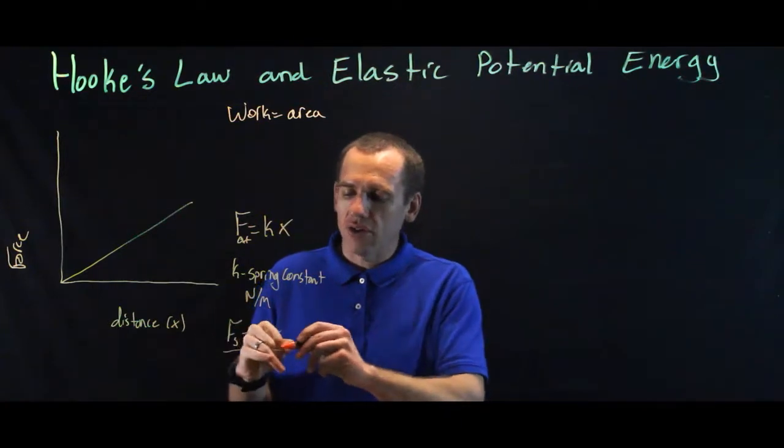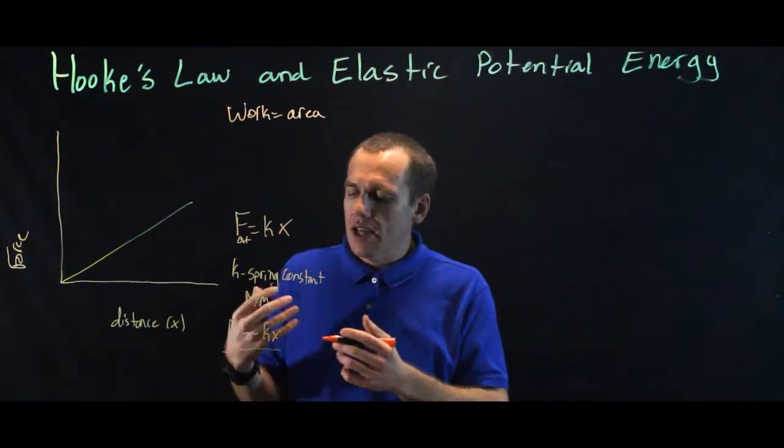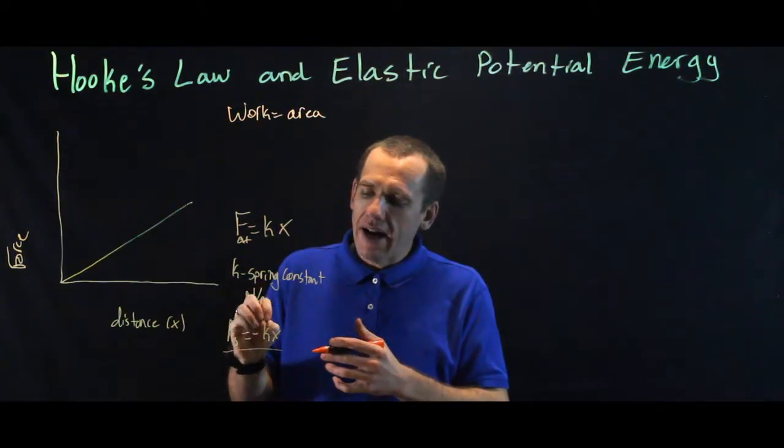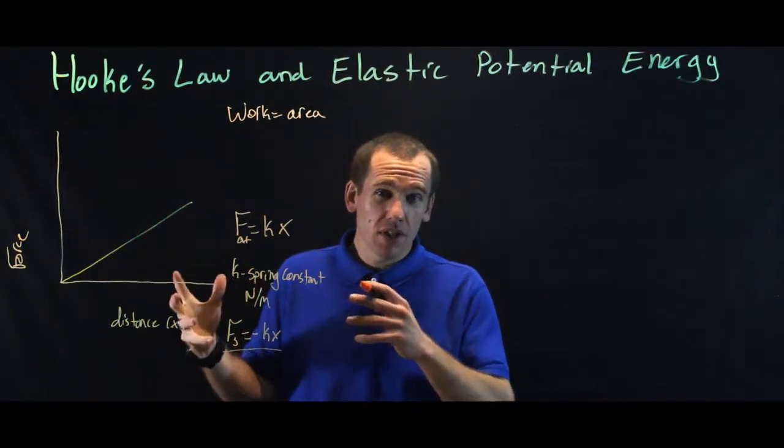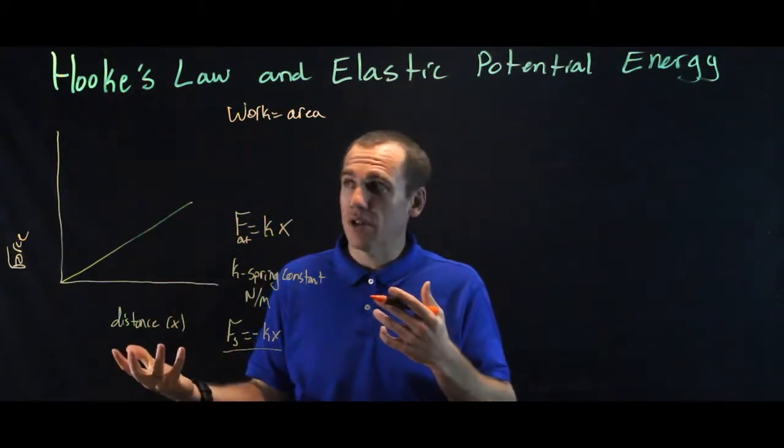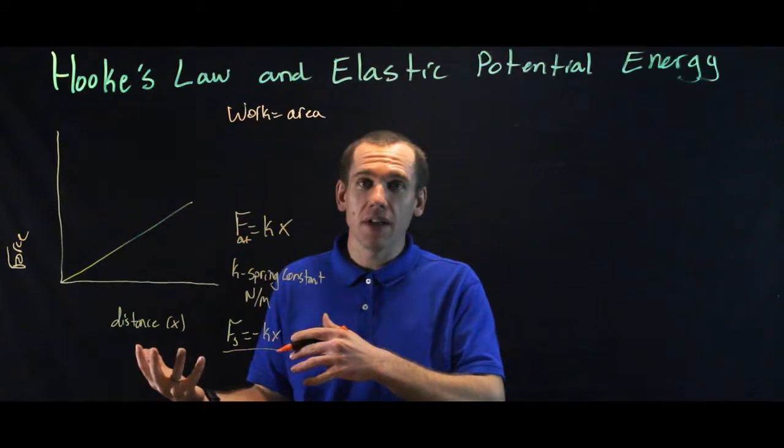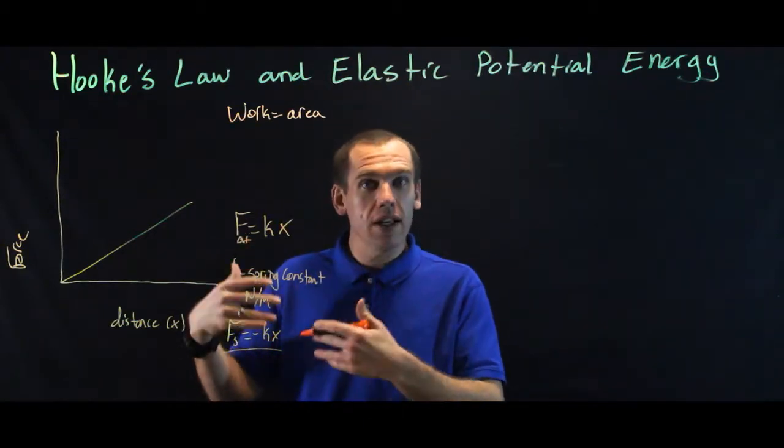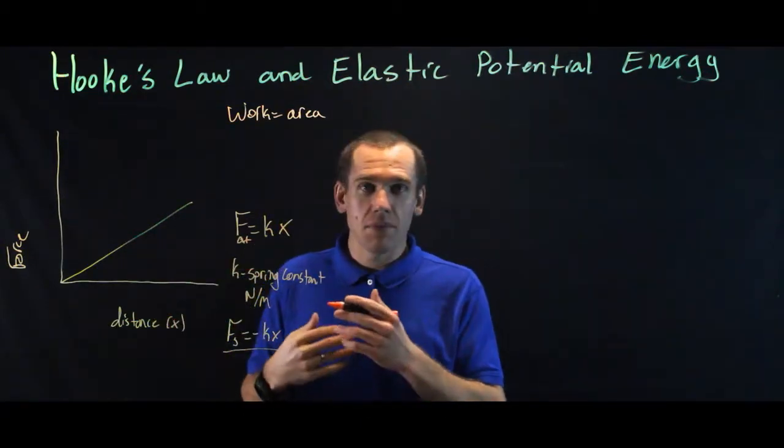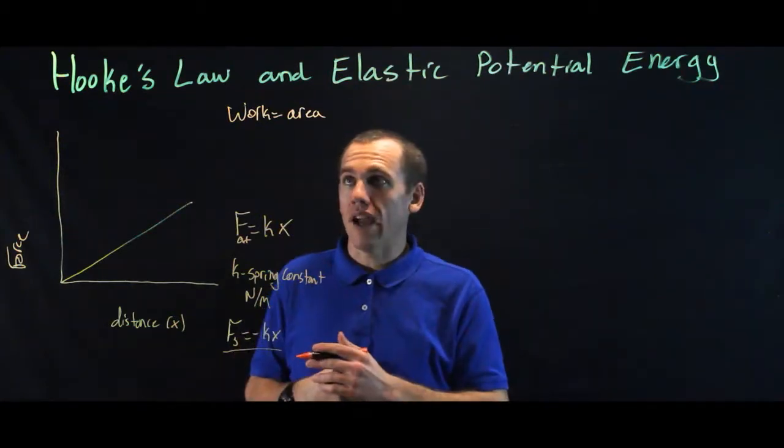Now, this is called Hooke's Law, or the spring constant. And so we can figure out how much force it takes to pull a spring at a given length. And that's actually the basis for a spring scale. We hang something off of it, and based on how far it stretches, we know how much it weighs, or how much force has to be exerted to balance the force due to gravity.